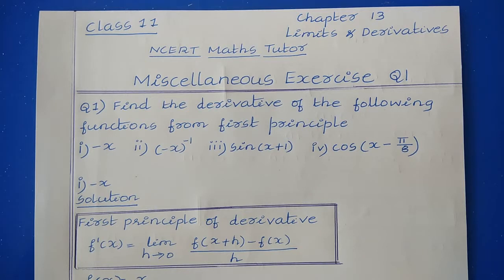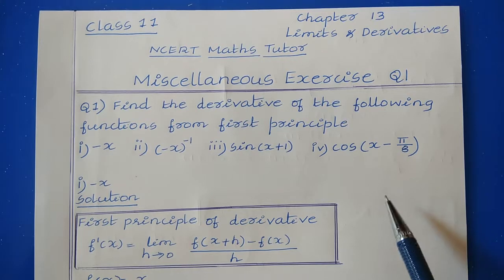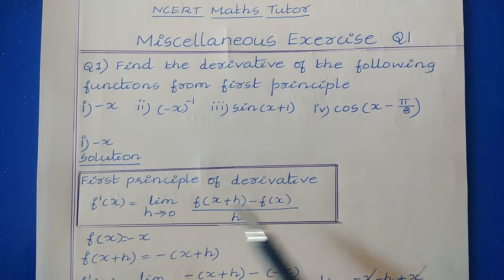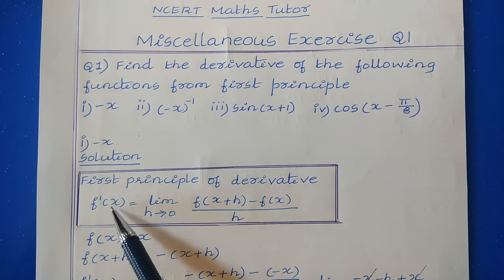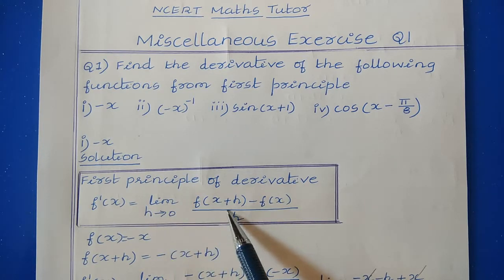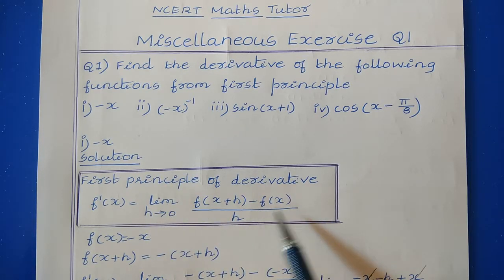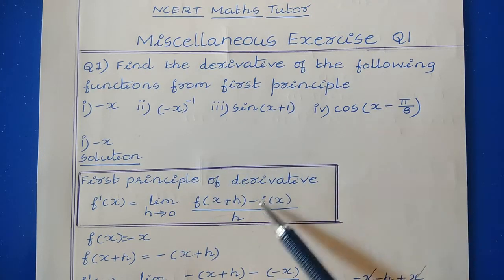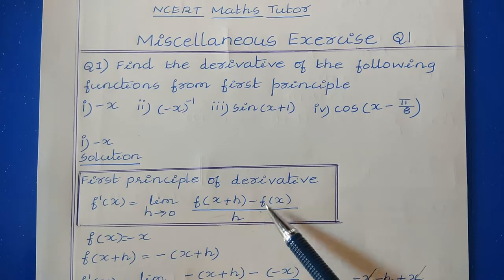Find the derivative of the following functions from first principle. They have given 4 problems. The first principle of derivative is: find f'(x) equal to limit h tends to 0, f(x+h) minus f(x) divided by h. We have to solve all 4 problems using this formula.